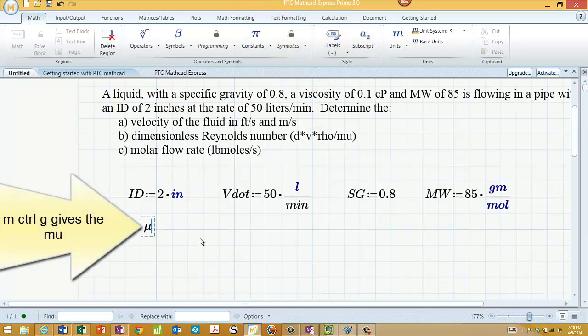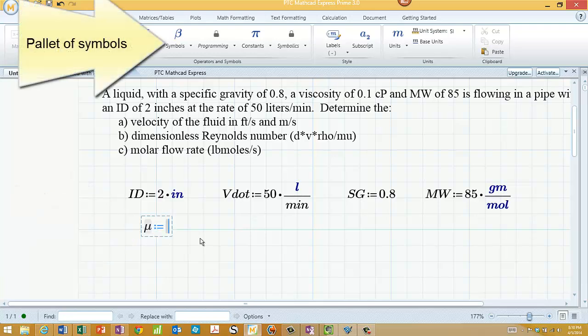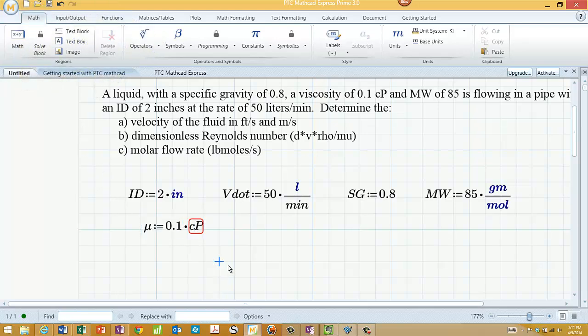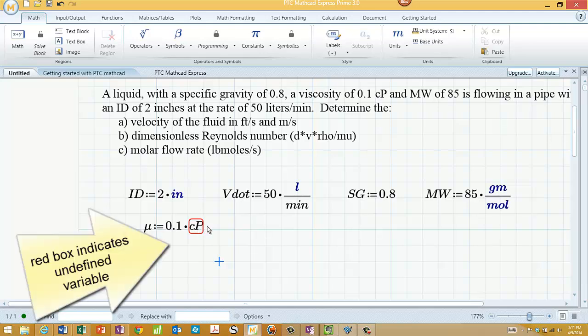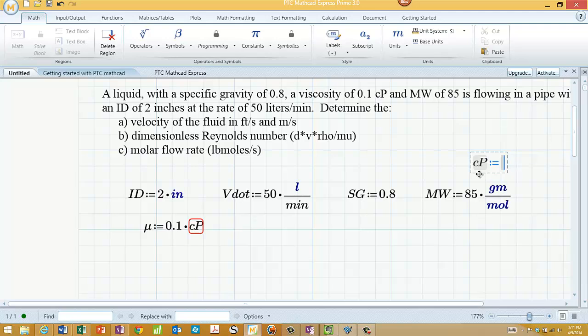The viscosity, if you take M and control G, you get the mu symbol. And that's going to be 0.1 times NCP. And when I hit enter, you'll notice that this turns red. It doesn't know what CP or centipoise is. But we can define a unit, and I'll do that right up here. CP, and I'll assign that, is 0.01 times poise.